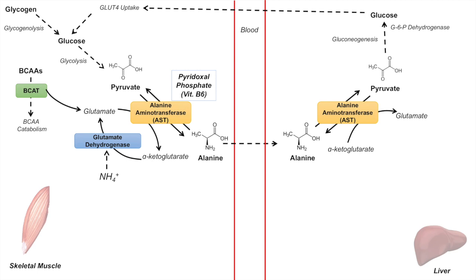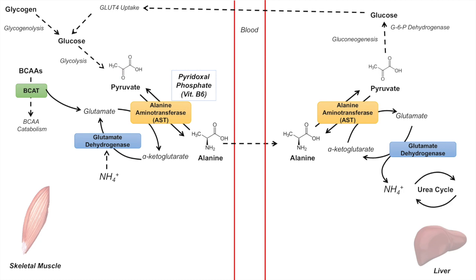Now that we've seen how the carbon skeleton of alanine is recycled, how does the ammonium or nitrogenous waste get recycled? The metabolism of alanine in the liver produces glutamate, which can then be processed by glutamate dehydrogenase to release ammonium. That ammonium is rerouted into the urea cycle, allowing excretion of nitrogenous waste. The urea cycle only occurs in the liver because the liver has the enzyme arginase, which is required for the urea cycle.